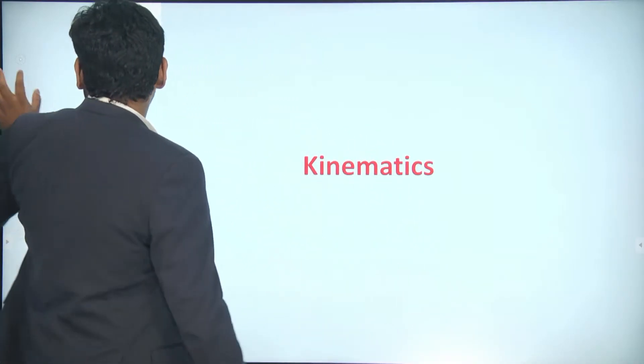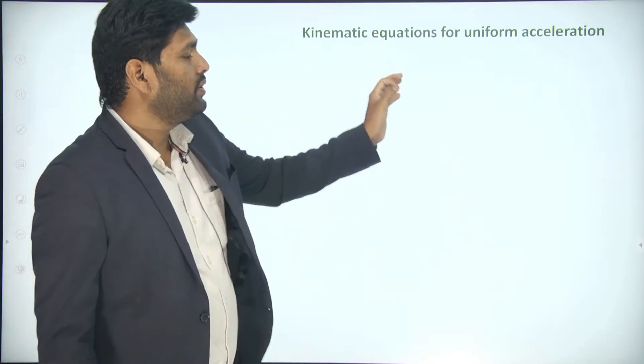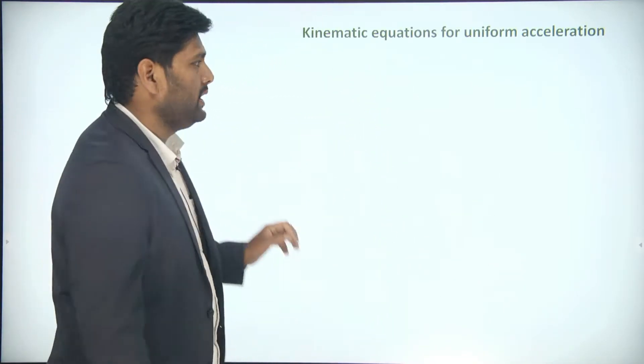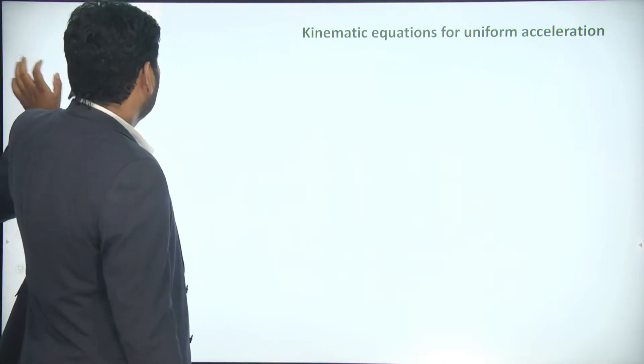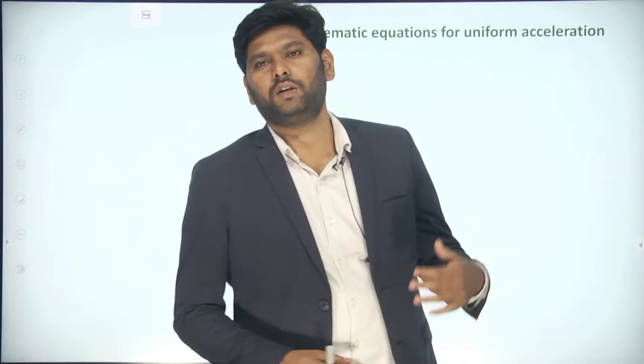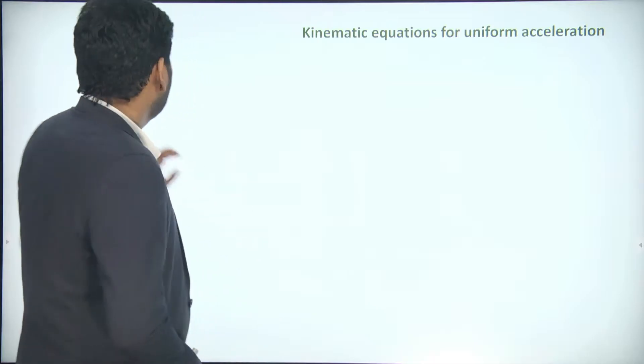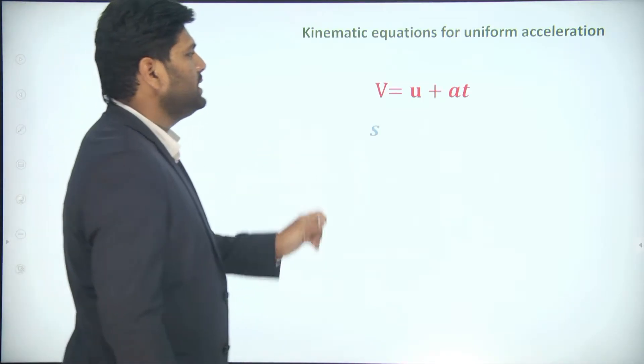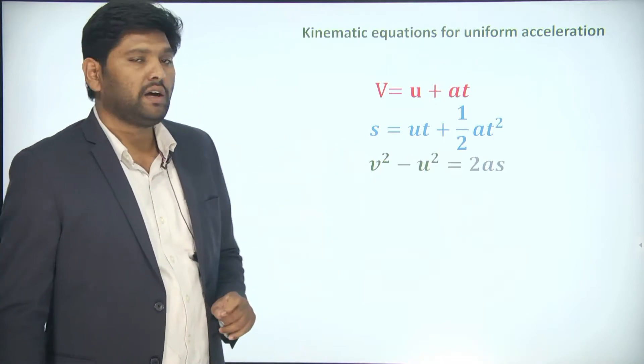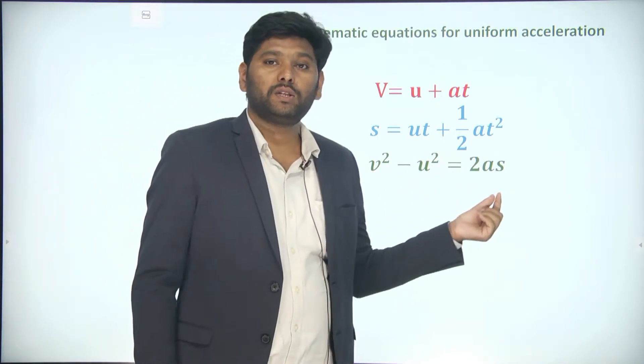We have already studied the equations of motion in Class 8. Let us recall those equations. The equations for uniform acceleration are: first, v = u + at; second, s = ut + ½at²; and third, v² − u² = 2as.